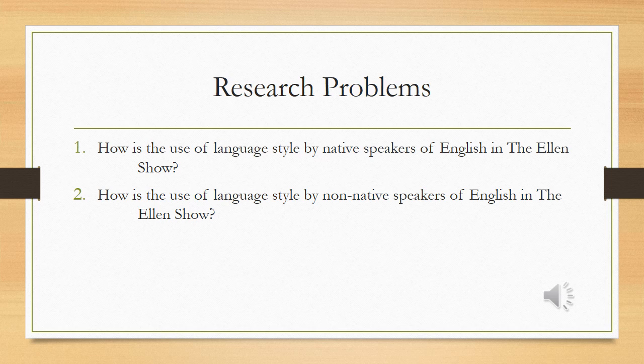Here, it used Martinger's theory in 1967, which divided language style into five branches: the first one is frozen style, the second one is formal style, and then consultative style, casual style, and the last is intimate style.